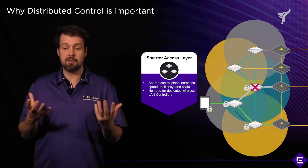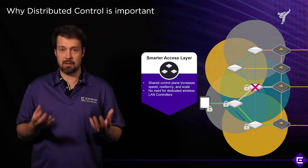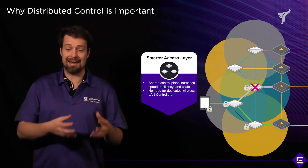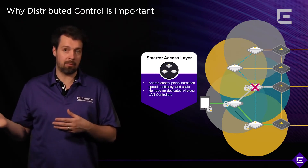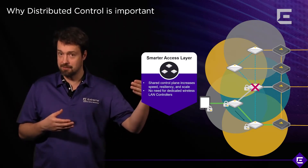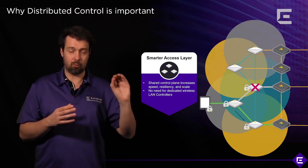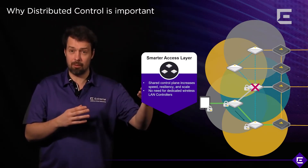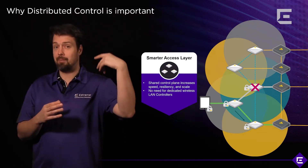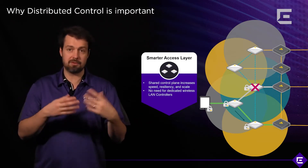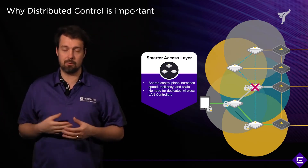And it's going to increase scale. To scale in such a scenario, you simply add more access points and let the control plane figure it out, as opposed to a controller-based deployment where you have to worry about controller capacity. When you go over capacity by even one AP, you have to buy a new controller. And if you want high availability, you actually have to buy two — either virtual or physical chassis — or if you're doing cloud, you're depending on that WAN connectivity.